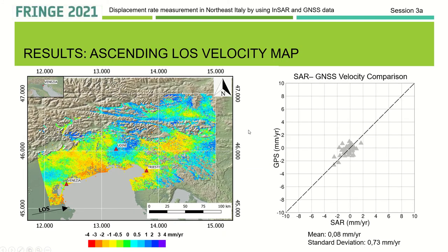Here are the results for the ascending dataset. We have a map showing the deformation with respect to the satellite, along the line of sight, and on the right a plot showing the comparison between SAR and GNSS velocity after the calibration.